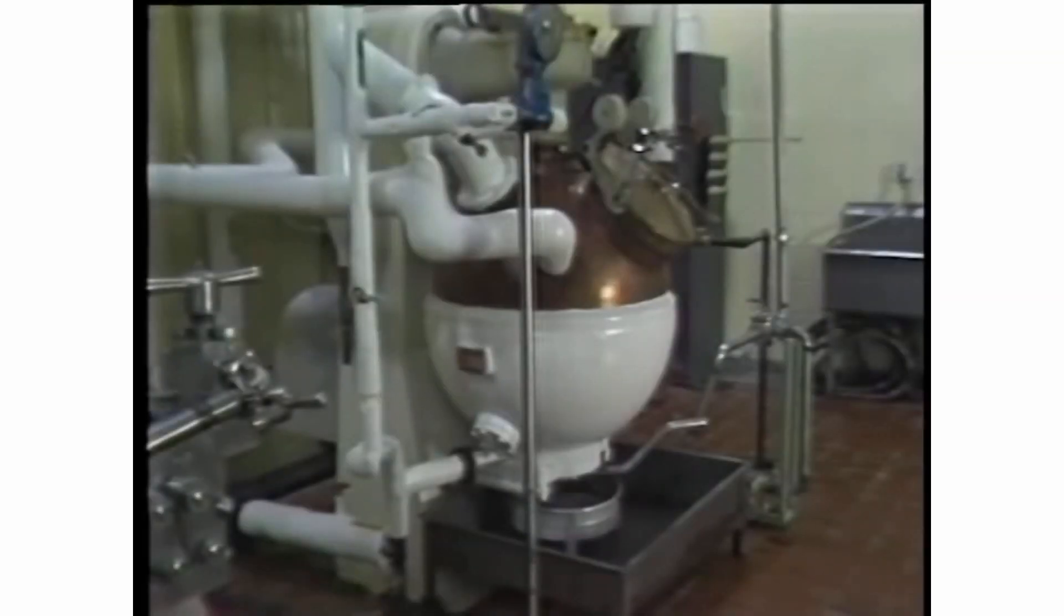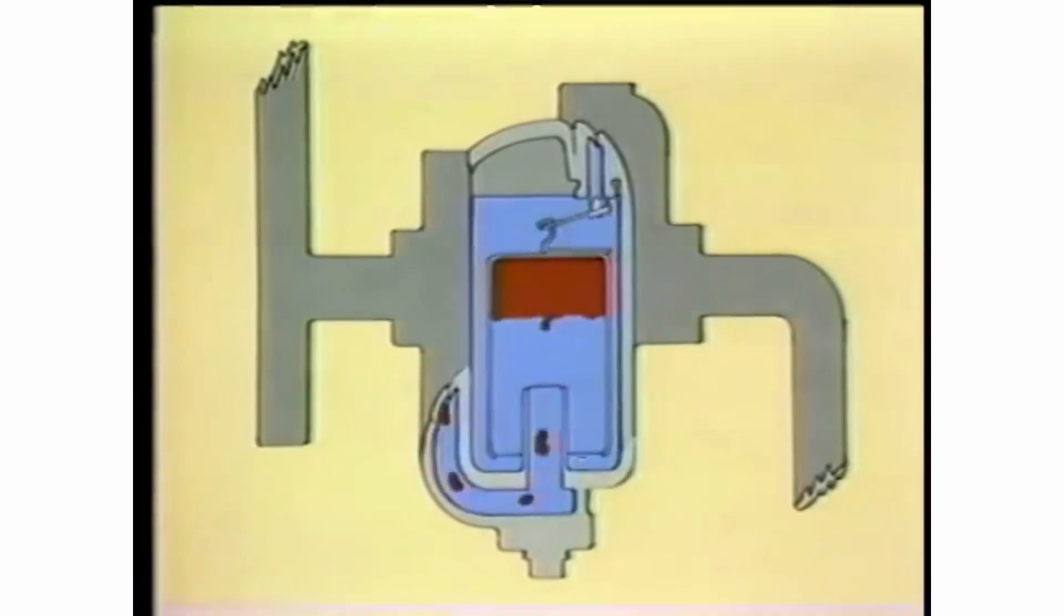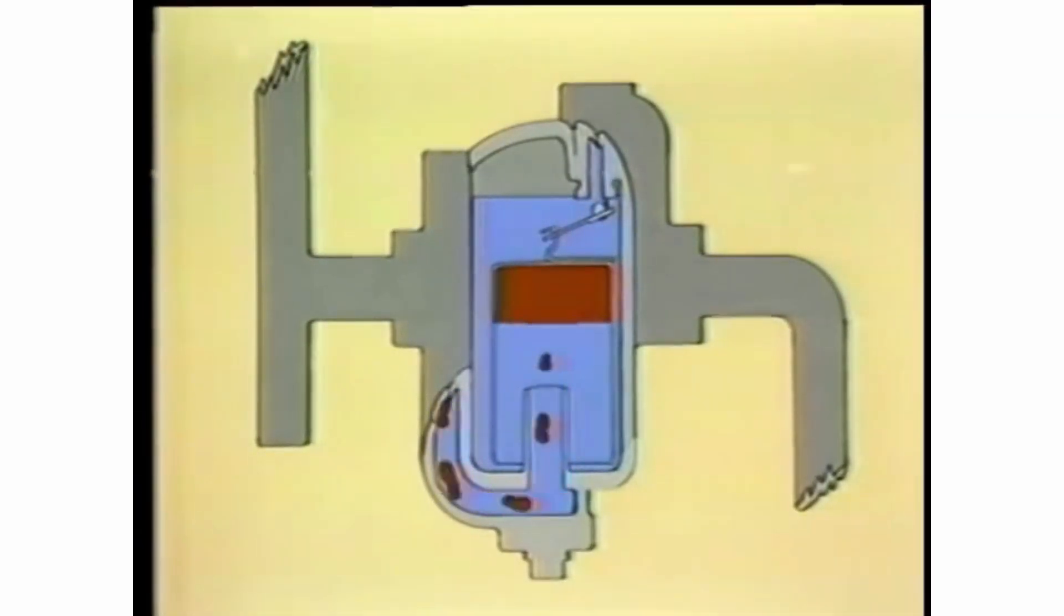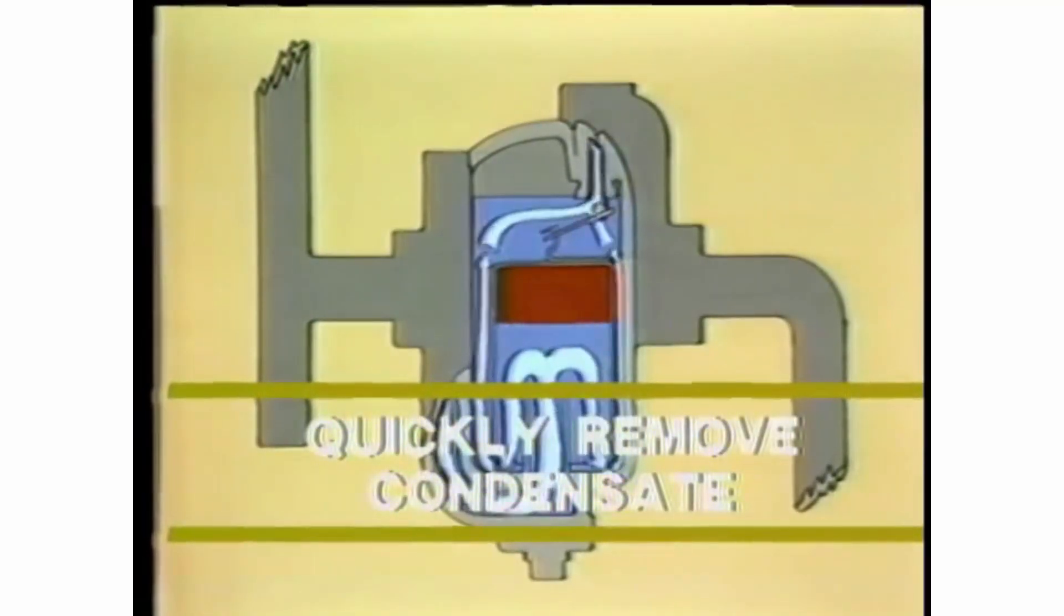Efficient use of steam with heat exchange and process equipment requires proper trapping. The job of the steam trap is to get the condensate and non-condensable gases out of the steam space as fast as they accumulate. The condensate must be removed quickly, or it will reduce the performance or heat transferability of the equipment.